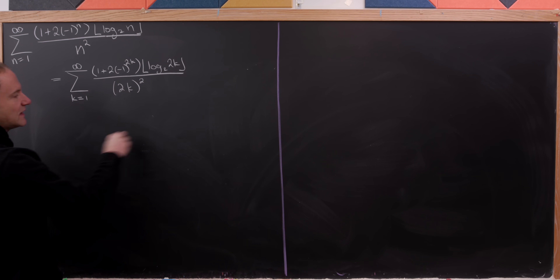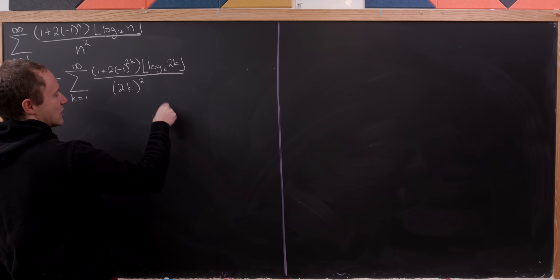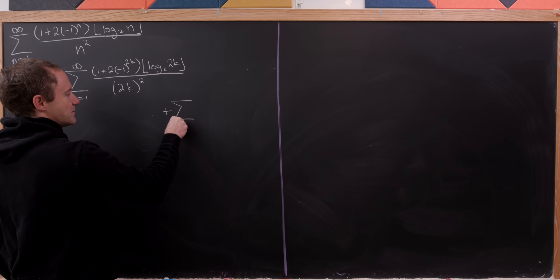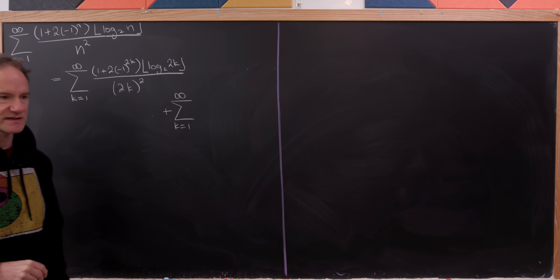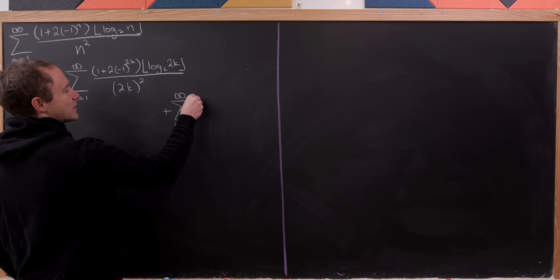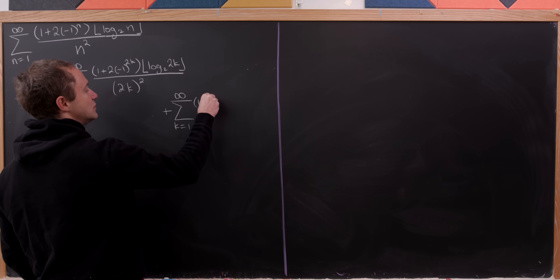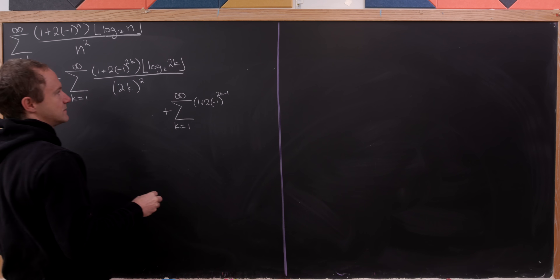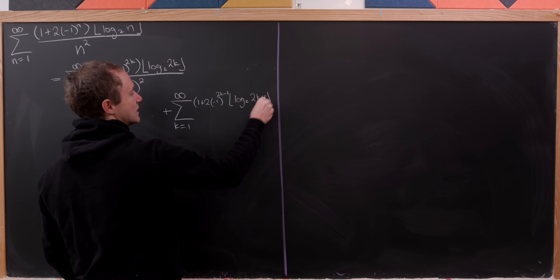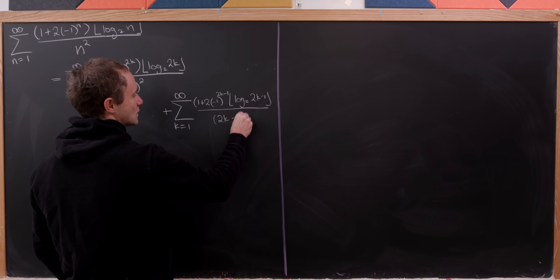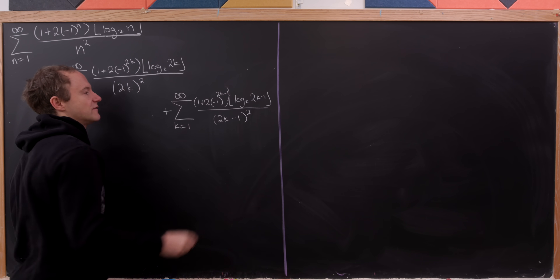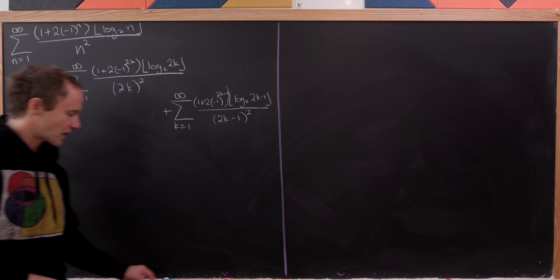There's a lot going on here. For the odd parts, we take the sum as k goes from 1 to infinity and replace all n's with 2k minus 1. So we have 1 plus 2 times negative 1 to the 2k minus 1, times the floor of the log base 2 of 2k minus 1, all over 2k minus 1 quantity squared.